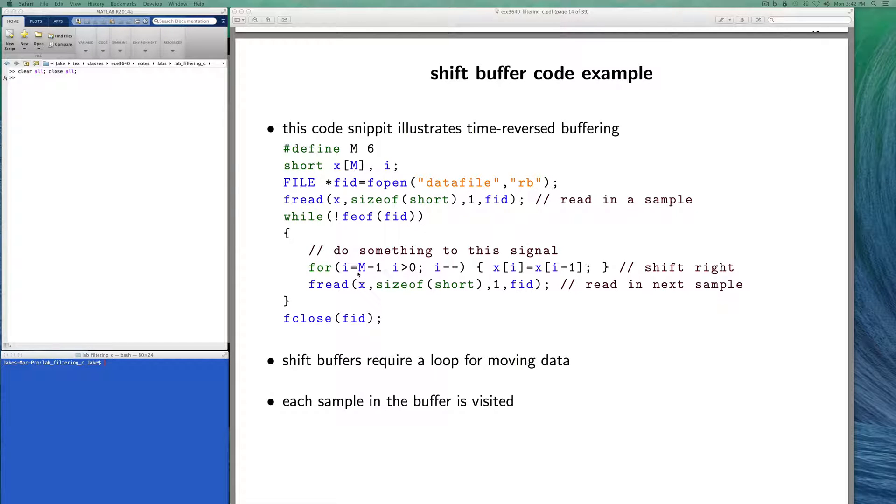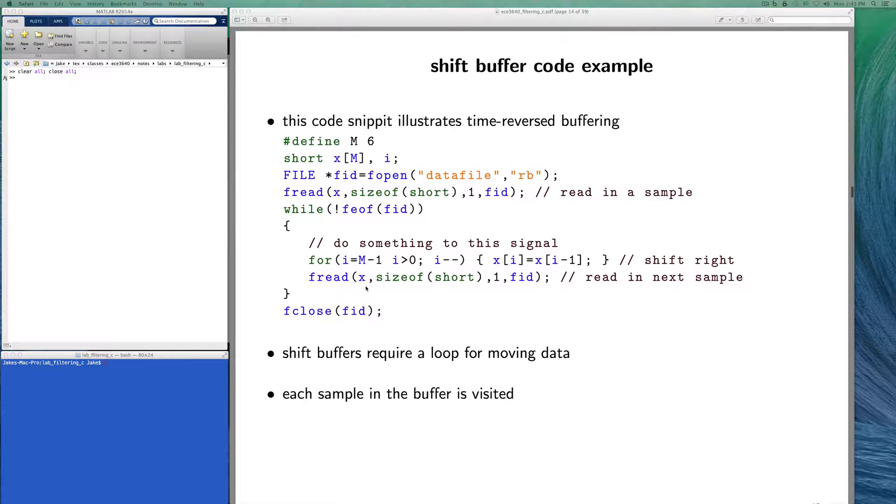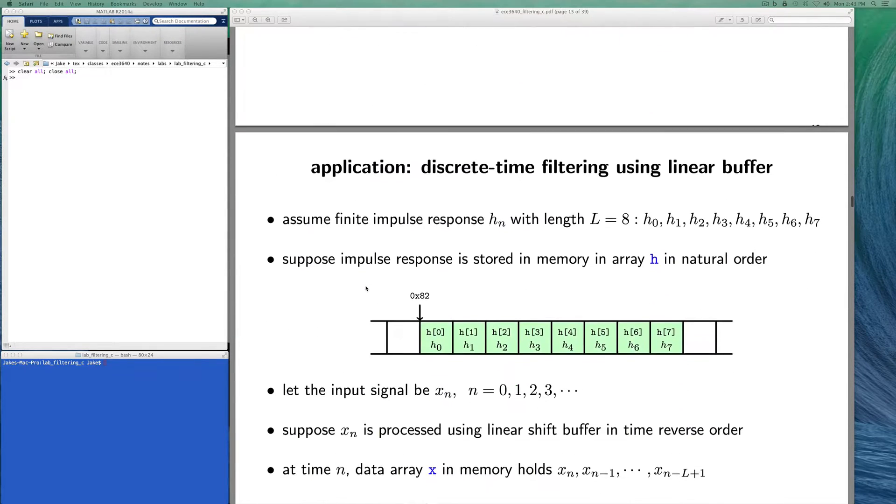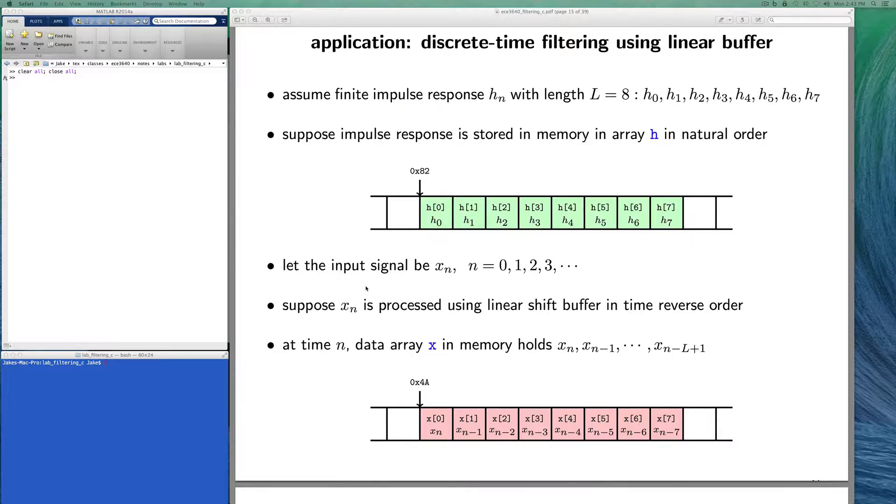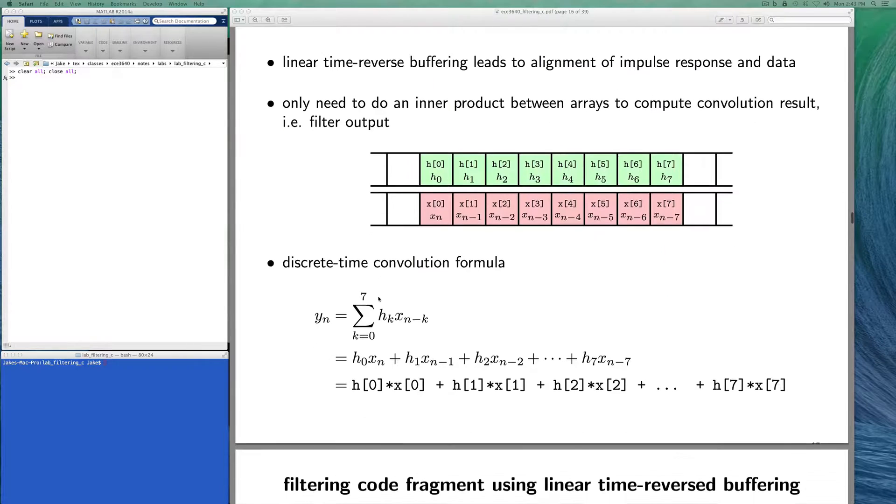As shown on this slide, we're reading the newest sample in at the left, and all the other values get shifted to the right. This for loop right here shows how we would do a right shift. You start at the end of the array, and the value at the end is equal to the value at the end minus one. We just do an adjacent shift to the right, and when we have completed all that shifting, then we read a new sample into the zeroth element of the array using fread. This doesn't do any convolution, but it does show how the data would move through the array.